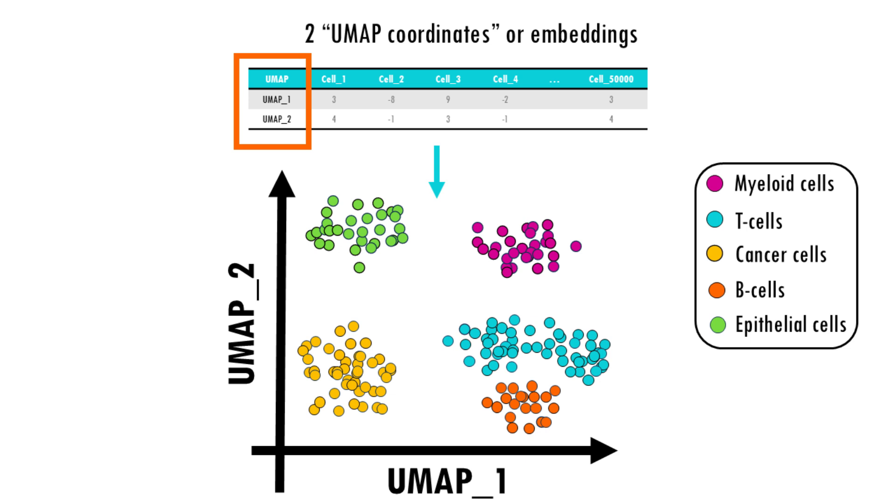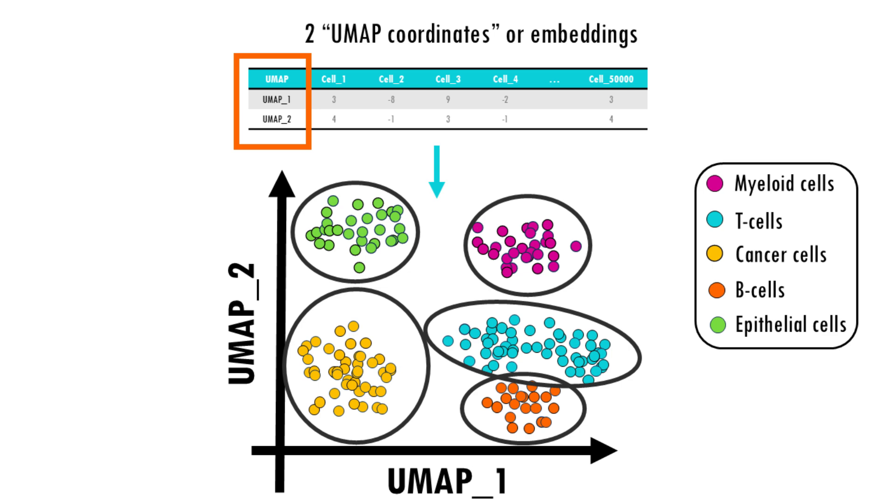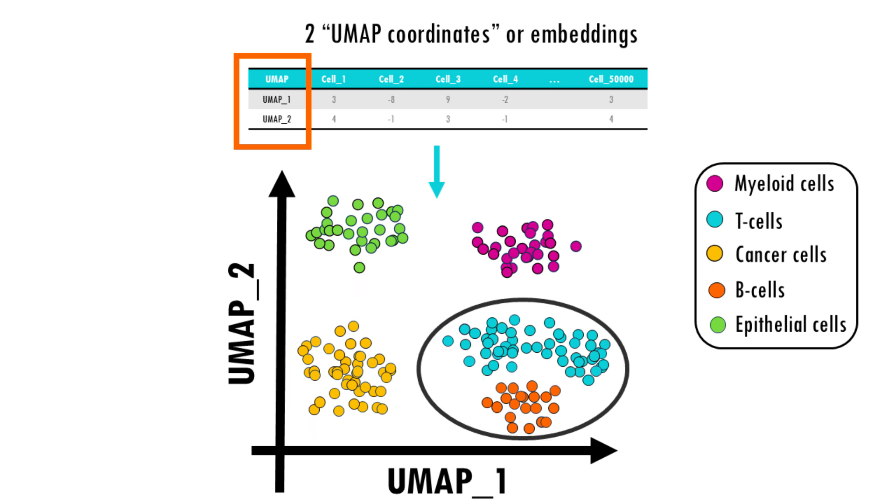So in our single cell RNA-seq dataset, we would be able to distinguish five main clusters of our main cell types, and you can see how lymphoid cells, B cells and T cells, clustered together because they are similar immune cells. So we have a nice global organization of the data, but also cells with very similar gene expression profiles clustered together.